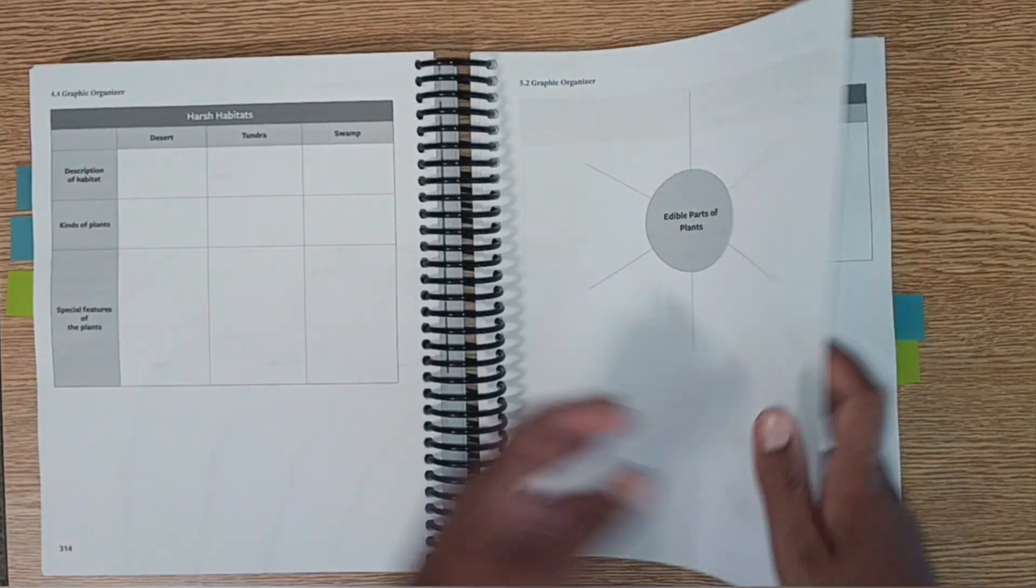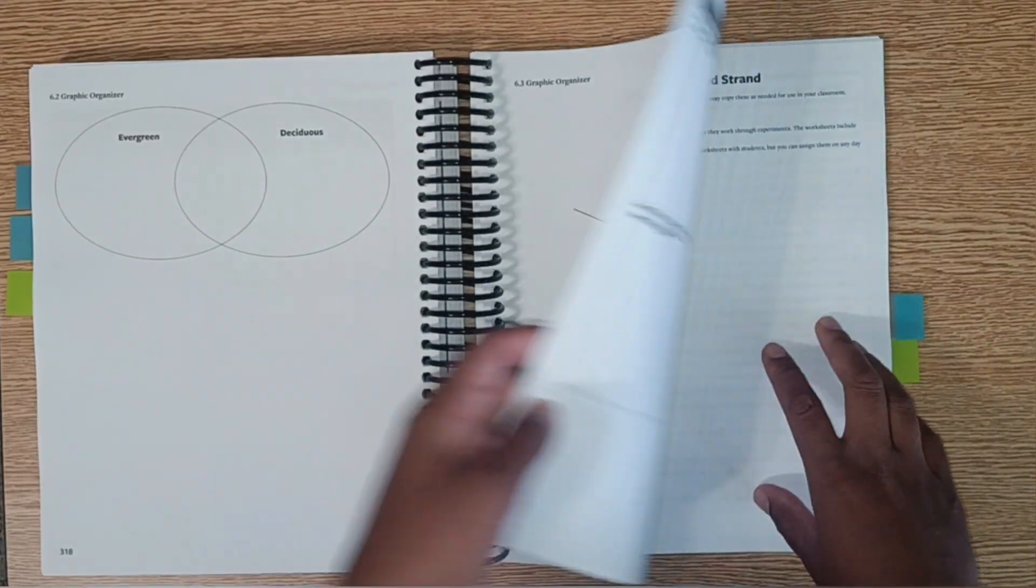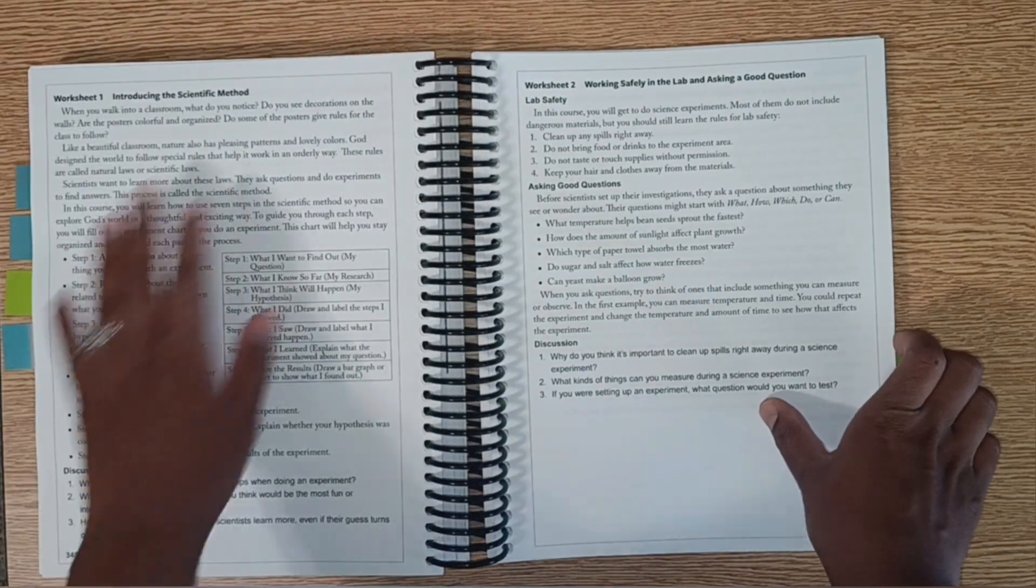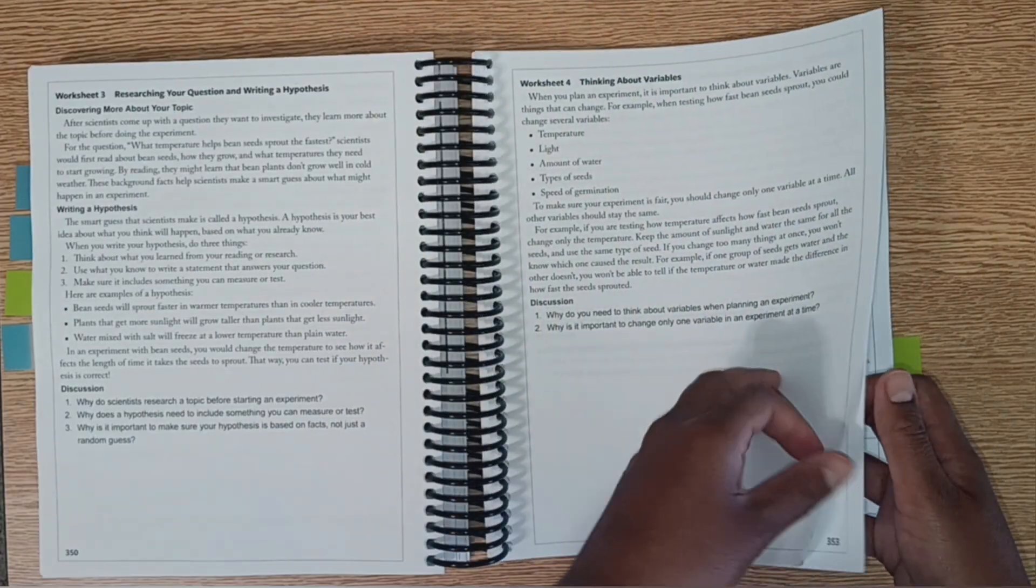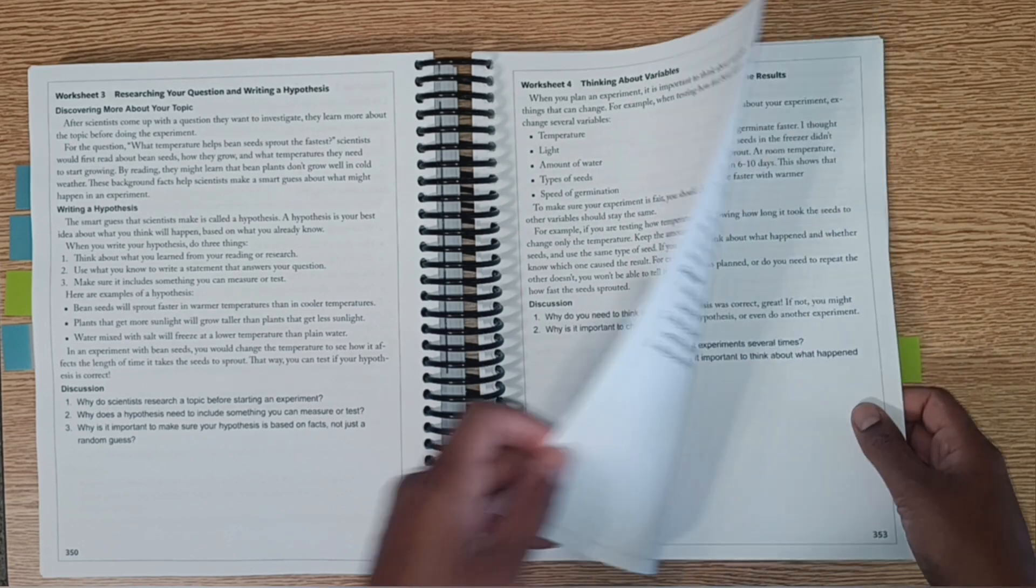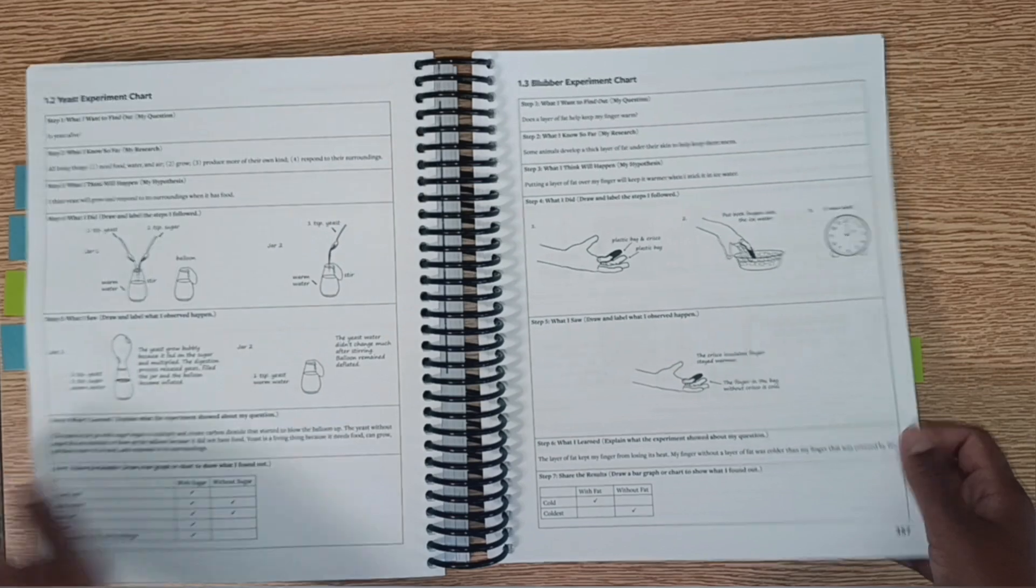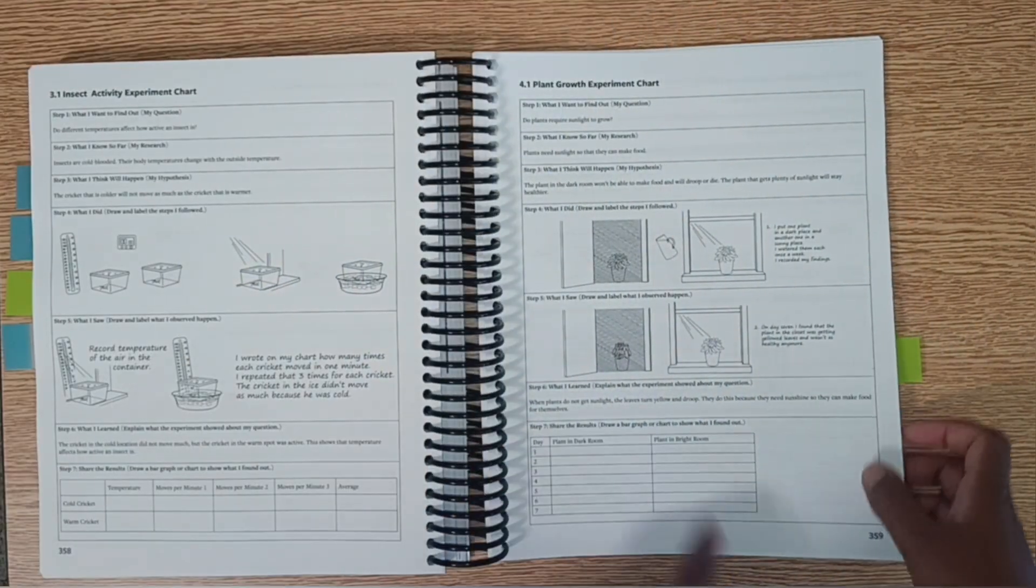Here are some of them. They also have working through the scientific method and lab safety, researching questions, writing a hypothesis, all kinds of worksheets, and reproducible experiment charts. So these are the charts that explain the different types of experiments that can be done.